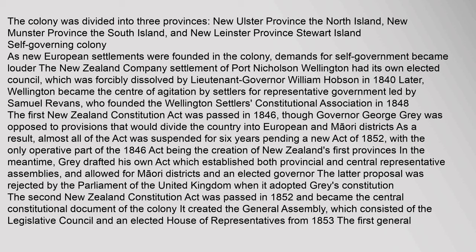As new European settlements were founded in the Colony, demands for self-government became louder. The New Zealand Company settlement of Port Nicholson (Wellington) had its own elected council, which was forcibly dissolved by Lieutenant Governor William Hobson in 1840. Later, Wellington became the centre of agitation for representative government, led by Samuel Revins, who founded the Wellington Settlers Constitutional Association in 1848. The first New Zealand Constitution Act was passed in 1846, though Governor George Gray opposed provisions that would divide the country into European and Maori districts.